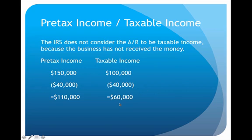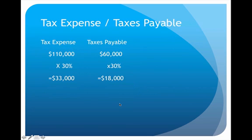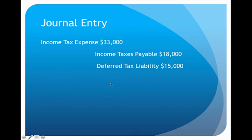Now that we have both income figures, we move to step two: calculating the actual taxes. The business is in a 30% tax bracket, so we apply 30% to each figure. According to GAAP, tax expense is $110,000 × 30% = $33,000. According to the IRS, taxes payable is $60,000 × 30% = $18,000. So we have two different versions of the tax amount.